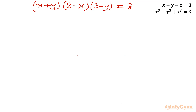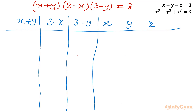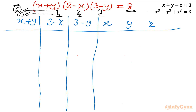Let me draw the chart with columns: x+y, 3-x, 3-y, x, y, and z. We need to find all factor combinations of 8. The possible factorizations are: 1×2×4 (giving 6 permutation cases), 2×2×2 (single case), and 8×1×1 (giving 3 permutation cases), for an overall total of 10 combinations.